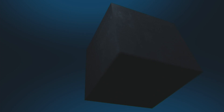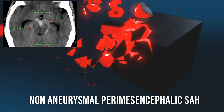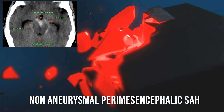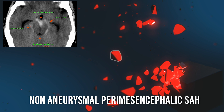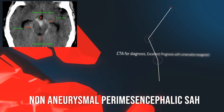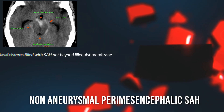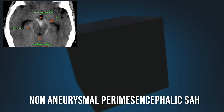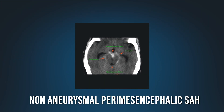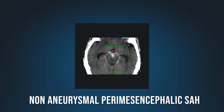In summary, nonaneurysmal perimesencephalic hemorrhage is limited to the basal cisterns. It is due to rupture of basal veins and pontine perforating arteries. CT angiogram negativity is important to diagnose this condition. This video covered nonaneurysmal perimesencephalic hemorrhage.